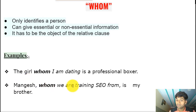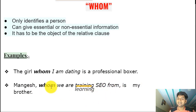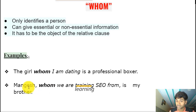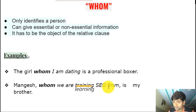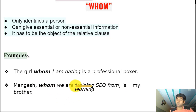'Mangesh, whom we are training SEO from, is my brother.' There's a comma before and after this clause, meaning it gives extra information — it's non-essential. 'Whom' is the relative pronoun identifying the noun 'Mangesh,' which is the object of the preposition 'from' in this clause. So this is a non-essential adjective clause with 'whom' as the relative pronoun.